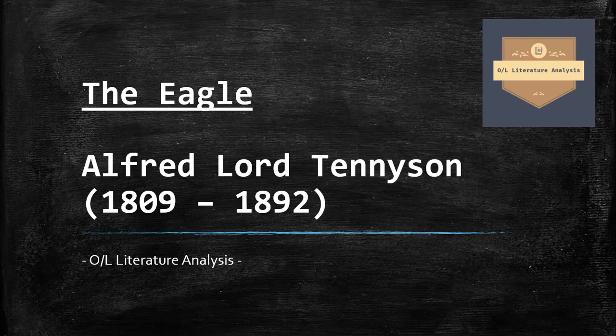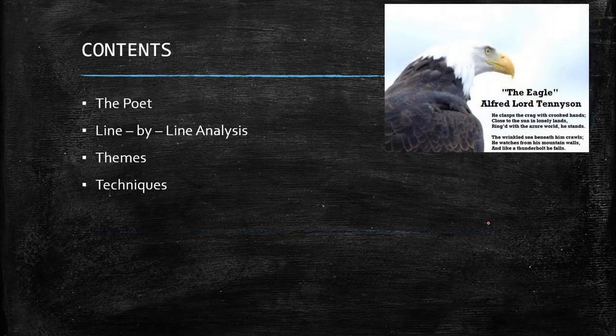Welcome to our literature analysis. Today we are going to start with our first poem, The Eagle, written by Alfred Lloyd Tennyson. Before we start, I would like to tell you that we will talk about the poet, then move on to our line by line analysis, then theme, and then two techniques.